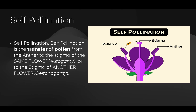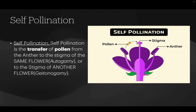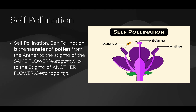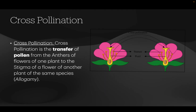There are two types of pollination: self-pollination and cross pollination. Self-pollination is the transfer of pollen grains from the anther to the stigma of the same flower, which is called autogamy, or to the stigma of another flower of the same plant, which is called gitonogamy.